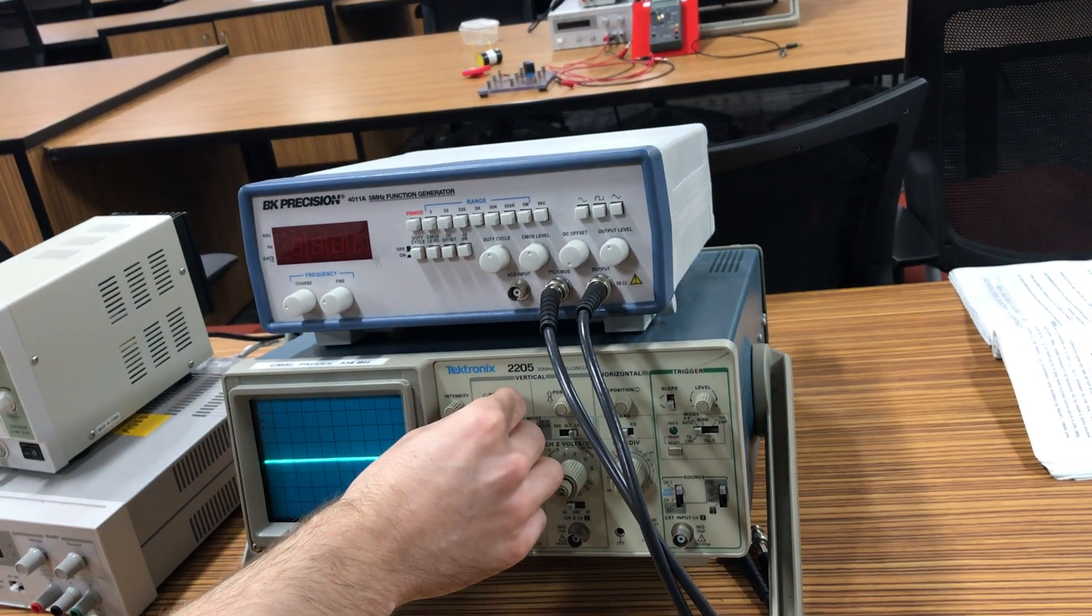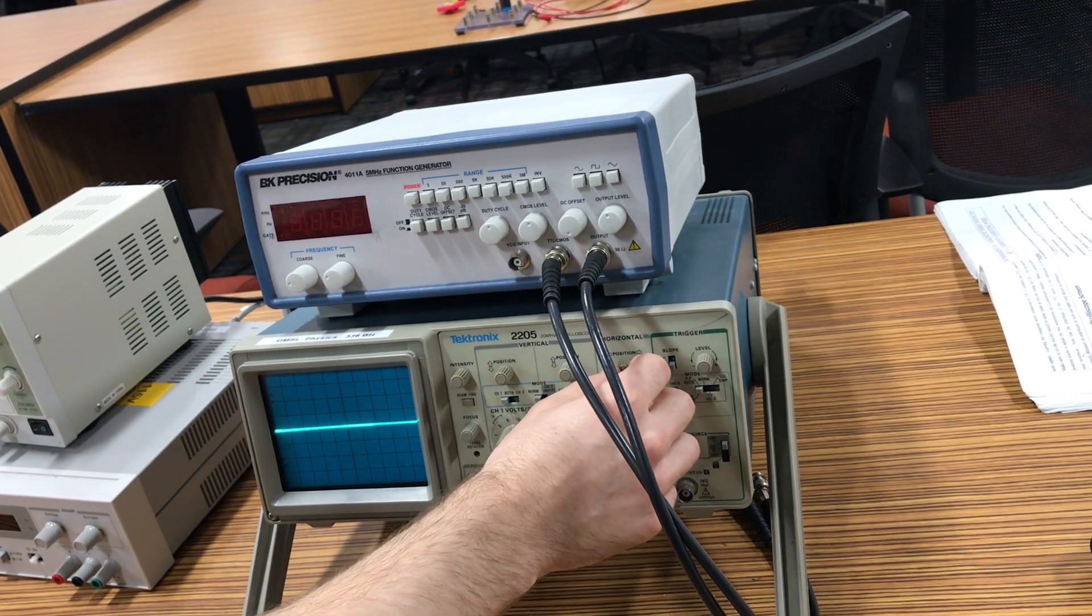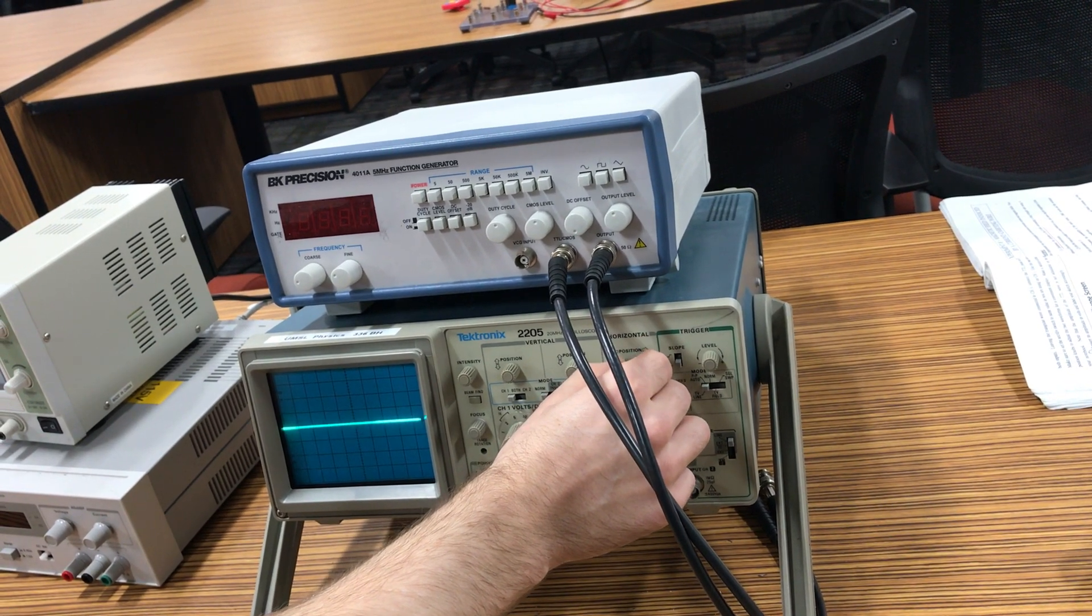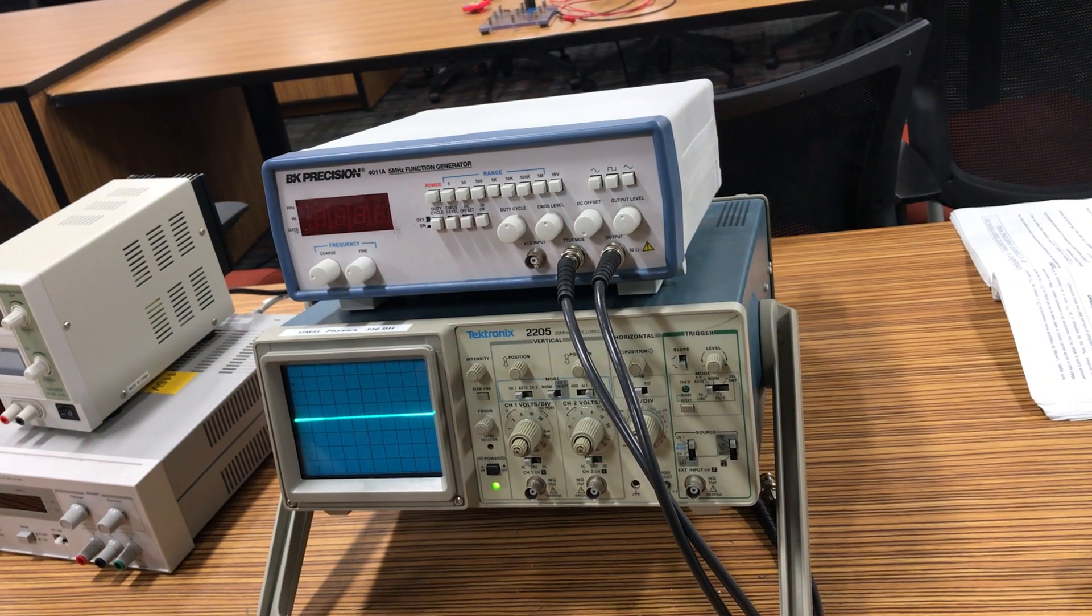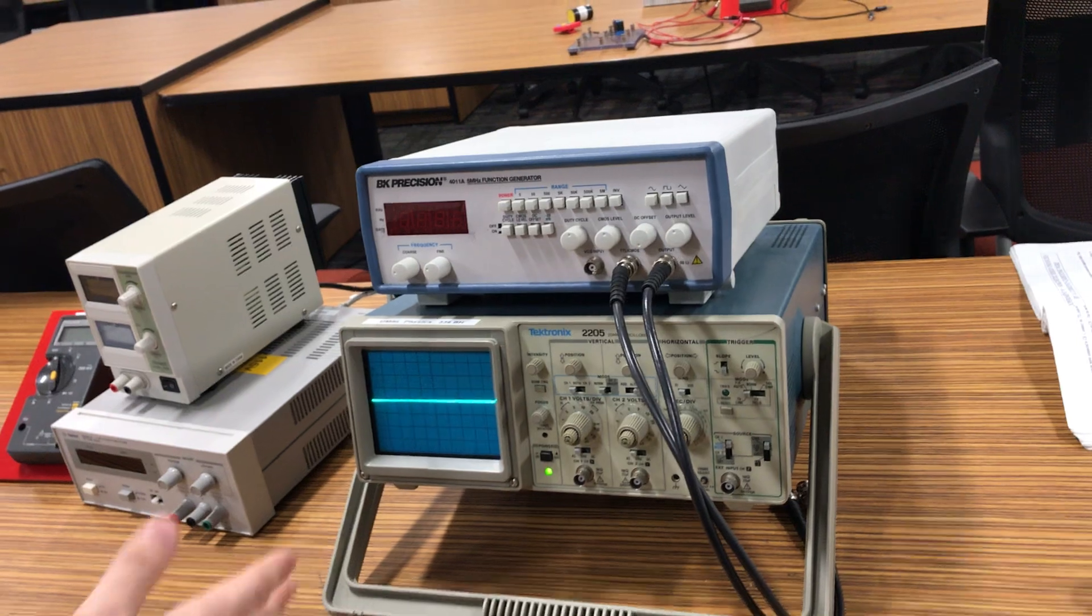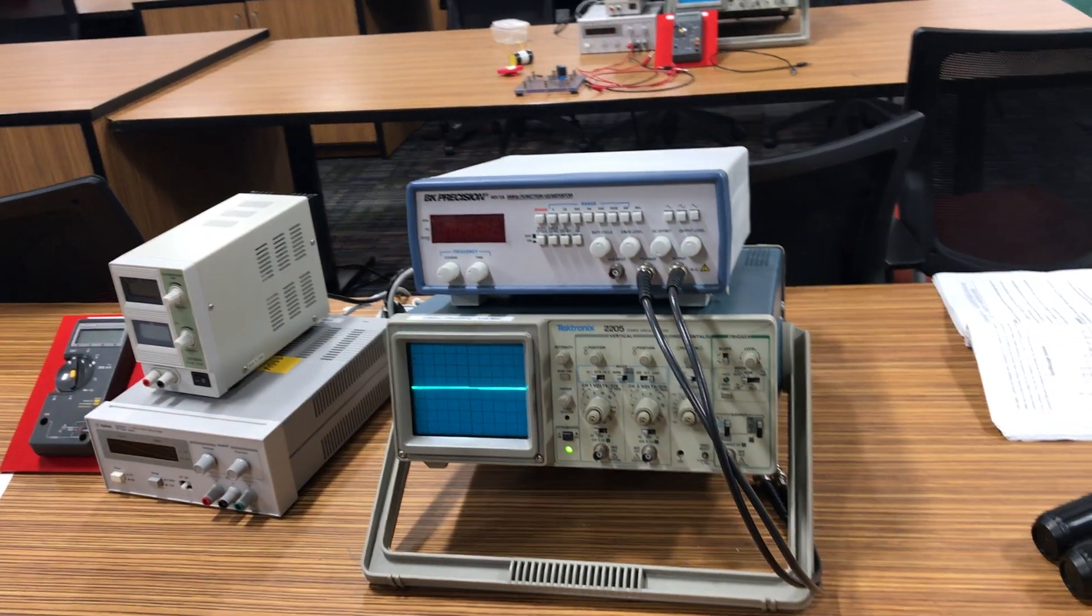You can use some different things on our oscilloscope to move this line around. There's this position knob that'll move it up and down, there's a horizontal one that can move it left and right, so you can move it around to get wherever you need to be to have a nice picture, make it easier to read.